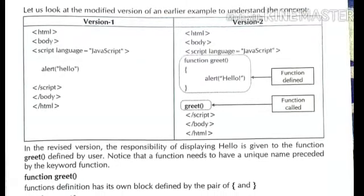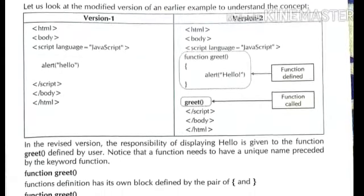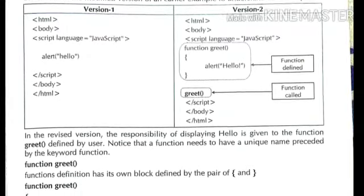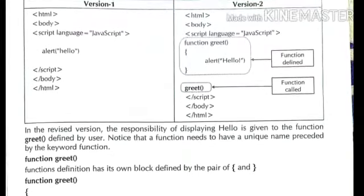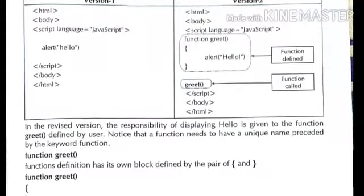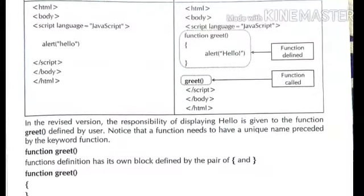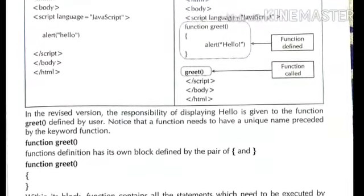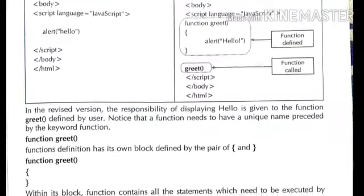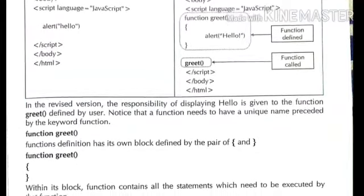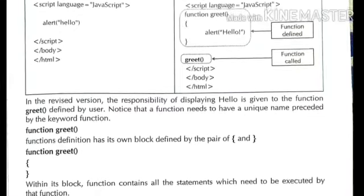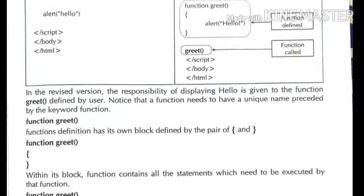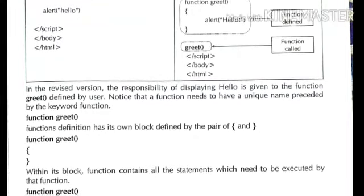For example, the first program: in HTML body with script language set to JavaScript, alert('hello') — close script, close body, close HTML. In this program, the word 'hello' is directly printed using the alert function. Now, the word 'hello' will be placed inside a function called greet, and when the greet function is called, it will be printed.